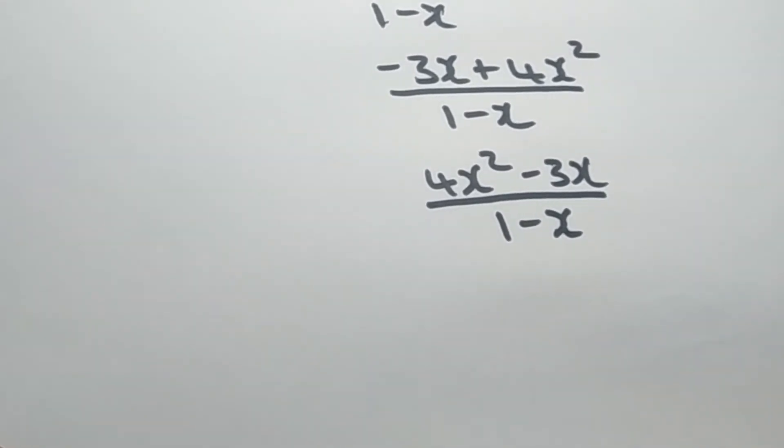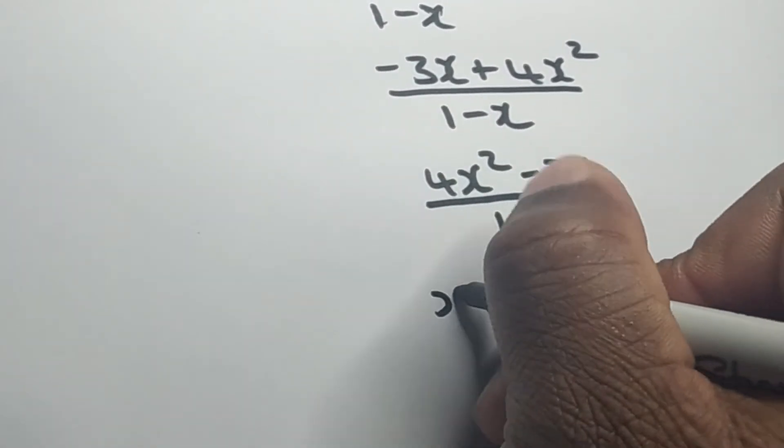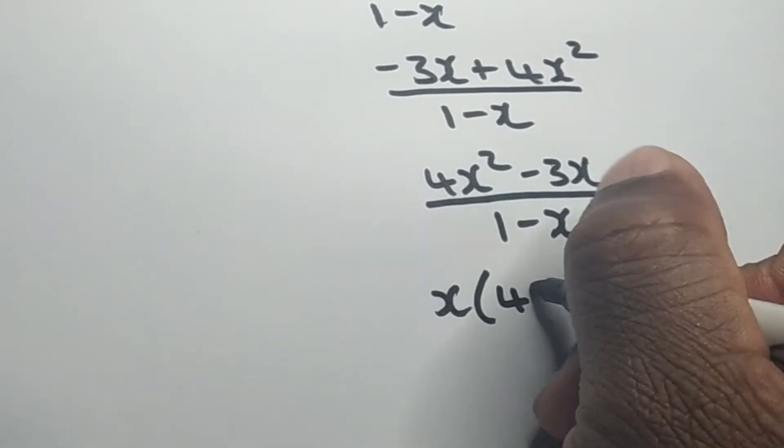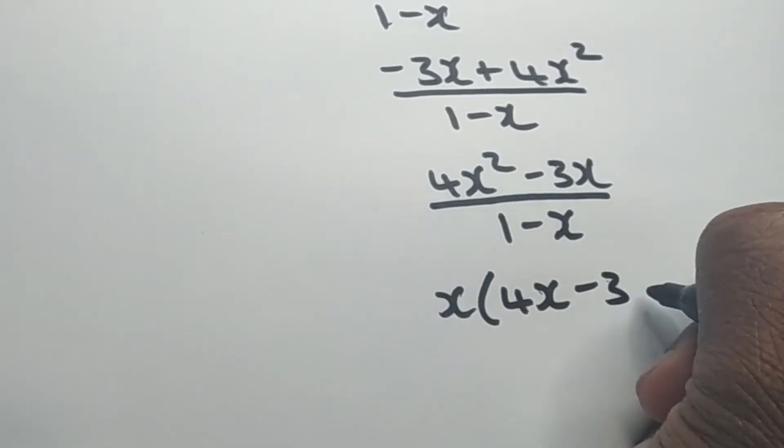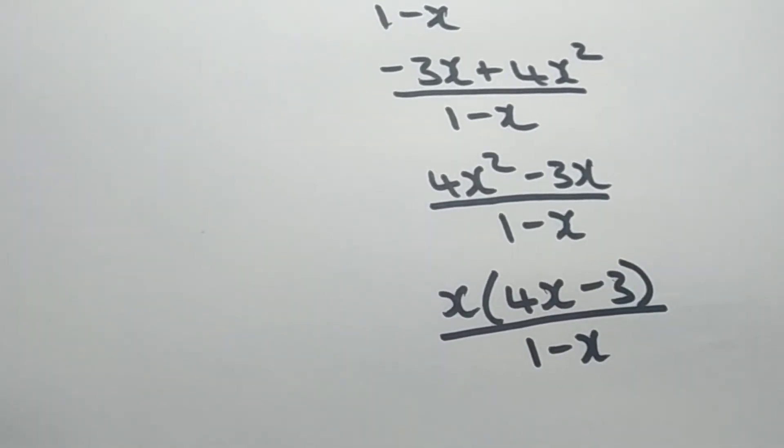And what we can do now is to factor out what's common in the numerator. And if you notice, we can factor out the x out of the numerator and we'll be left with (4x-3) all over 1-x.